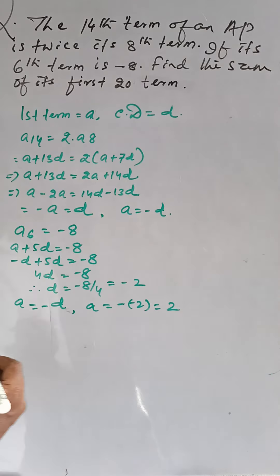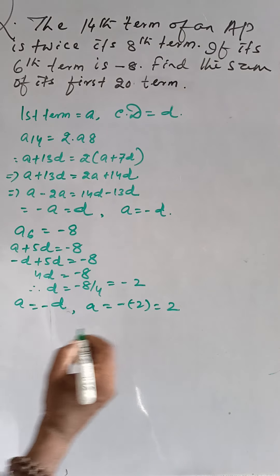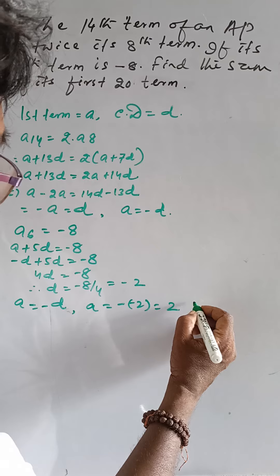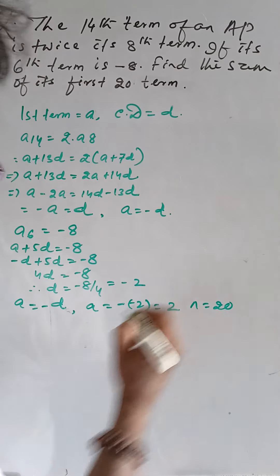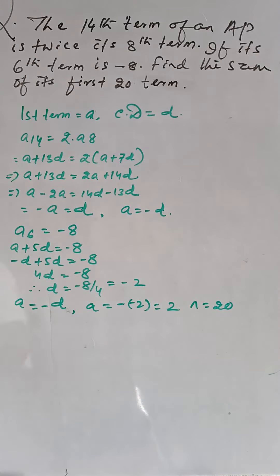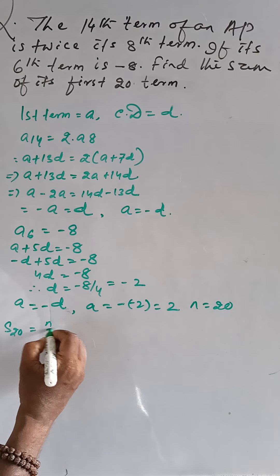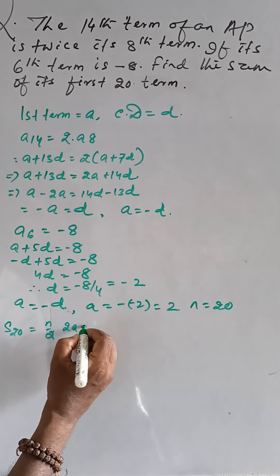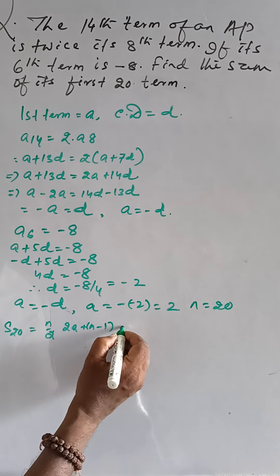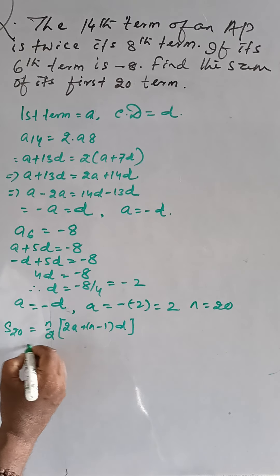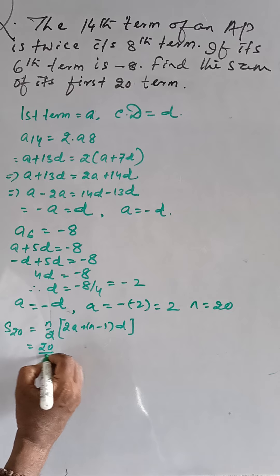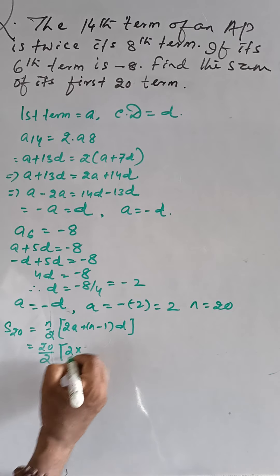Then we need sum of 20th term so that N is equal to 20 here. That means sum of 20th term is equal to N by 2, 2A plus N minus 1 into D as the formula. Then that is 20 by 2,